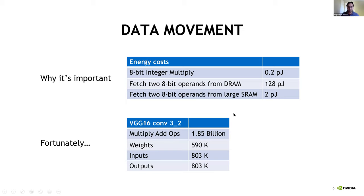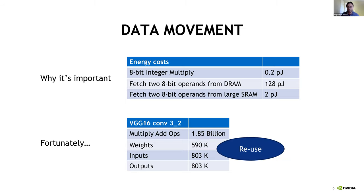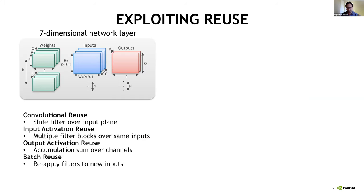Fortunately, in an example DNN layer, the number of operands versus the number of arithmetic operations is roughly a three-order-of-magnitude difference. That means there's a ton of reuse of the same operands to perform a large number of computations. This gives us hope — we want to take advantage of this reuse.